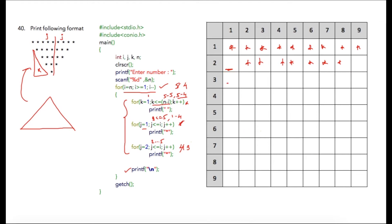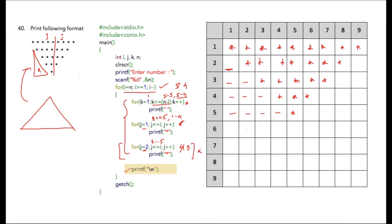The same thing continues — spaces will be incremented and the number of stars will change accordingly across both j for loops. In the fourth iteration there will be three spaces and three stars total, then four spaces and a single star. In the final iteration i will be 1, and since j is initialized to 2, the condition 2 less than or equal to 1 is false, so no additional star is printed. After the final printf newline, i is decremented to 0, making the condition 0 greater than or equal to 1 false, terminating the for loop and completing the program.